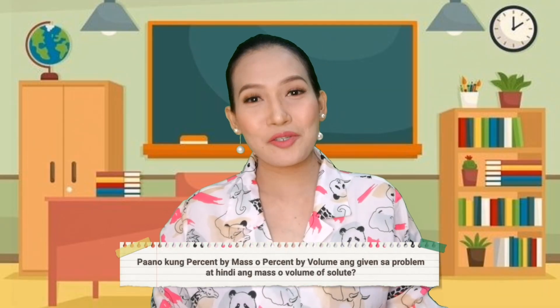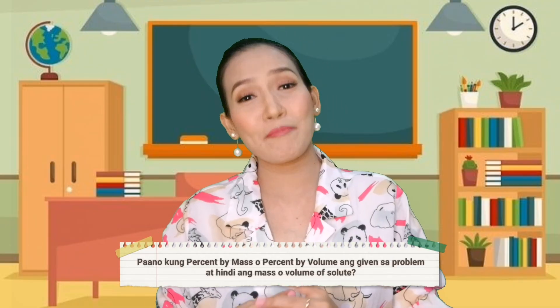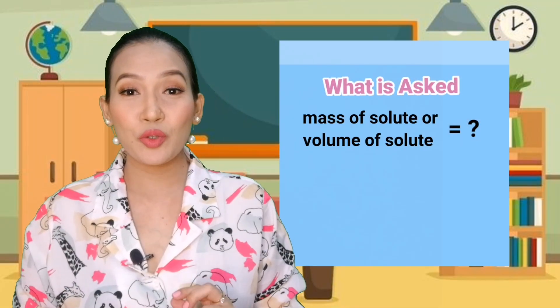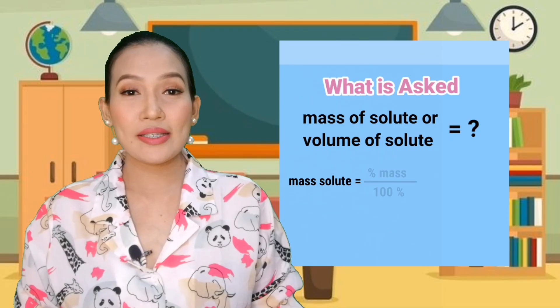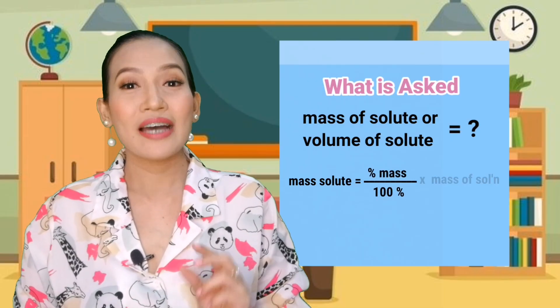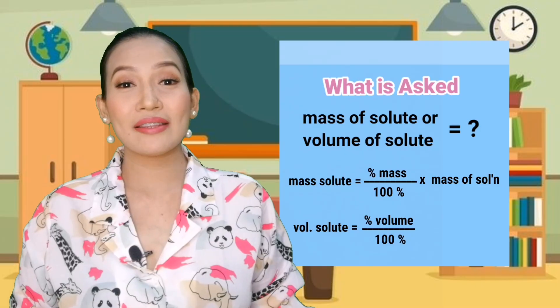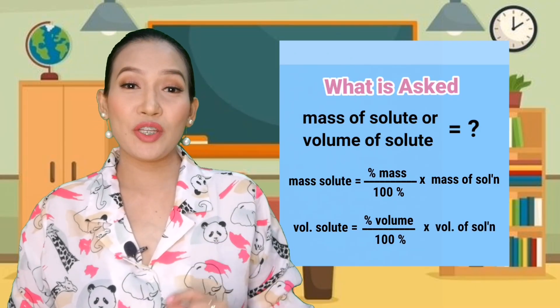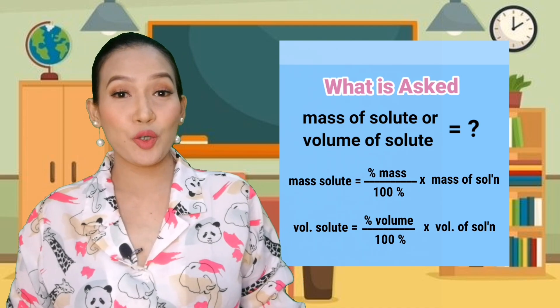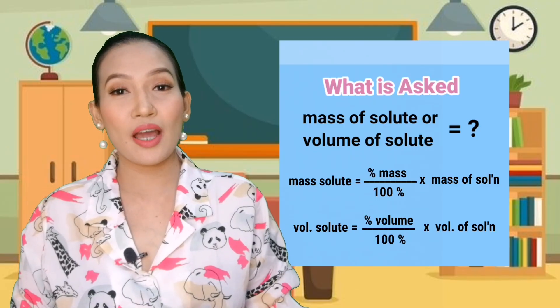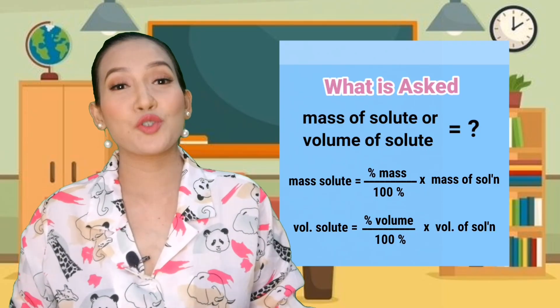What if the percent by mass or percent by volume of the solution is given in the problem instead of the mass or volume of solute? If the percent by mass or percent by volume is given and what is asked is the mass or volume of solute, then you need to use the formula: mass of solute equals percent by mass divided by 100% times mass of solution. Or: volume of solute equals percent by volume divided by 100% times volume of solution. I showed in my previous video how I derived these equations to solve for mass or volume of solute. Now, let's try answering the following word problems.